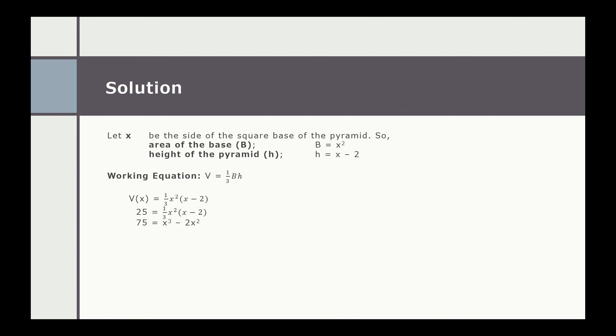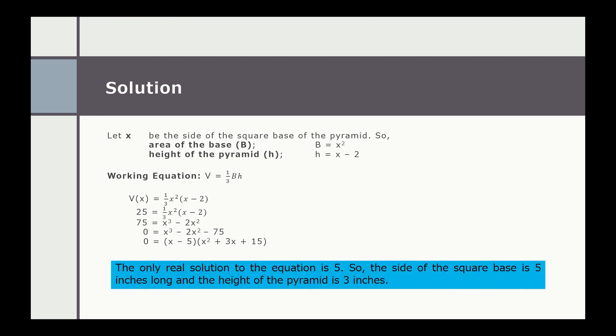So 75 equals x² multiplied by (x minus 2), which gives us x³ minus 2x². Transposing 75, we have 0 equals x³ minus 2x² minus 75. The factored form of x³ minus 2x² minus 75 is (x minus 5) multiplied by (x² plus 3x plus 15). For this word problem, the only real solution to the equation is 5. So the side of the square base is 5 inches long and the height of the pyramid is 3 inches.